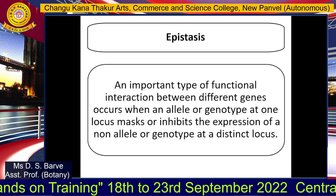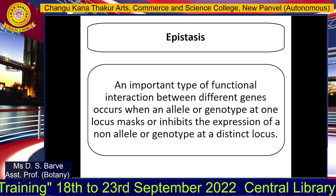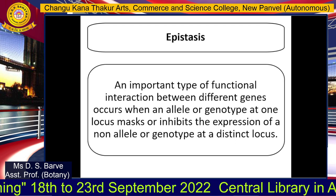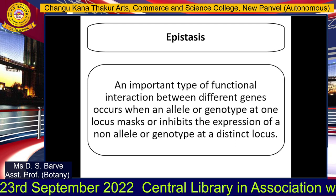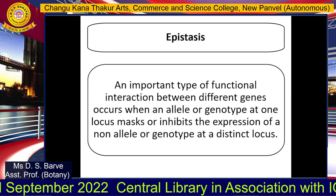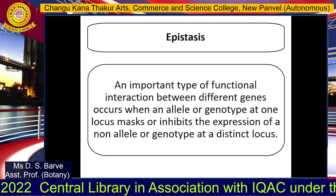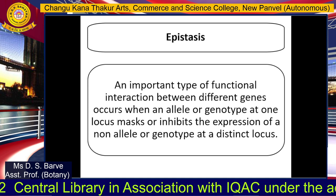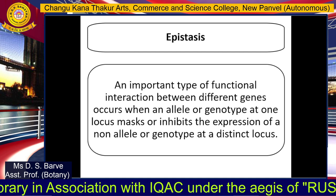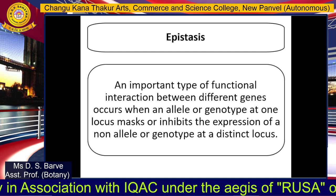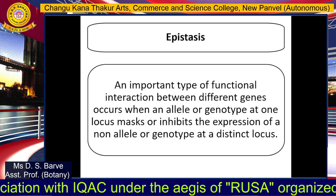Hello students, in this session we shall be studying about epistasis. Epistasis is defined as a type of functional interaction between two different genes wherein one gene or a pair of alleles at a particular locus inhibits or masks the expression of another gene or pair of alleles at a distinct locus.